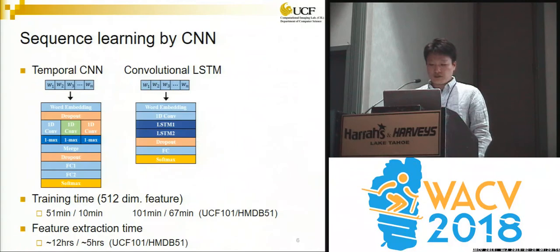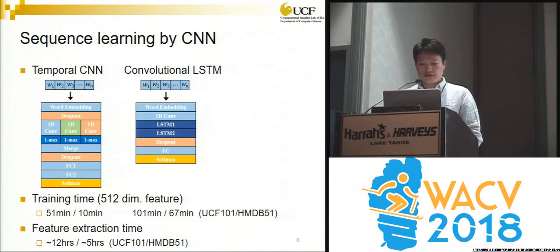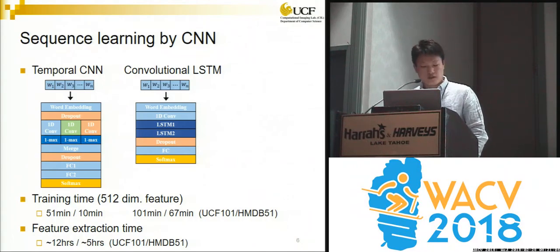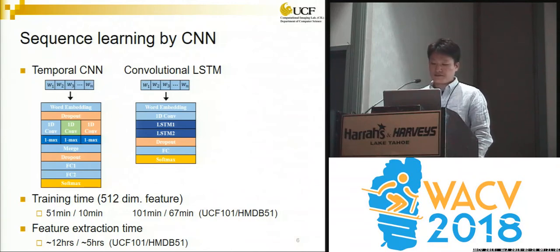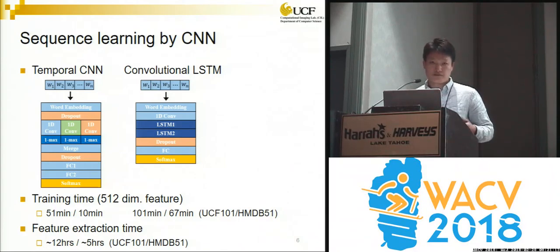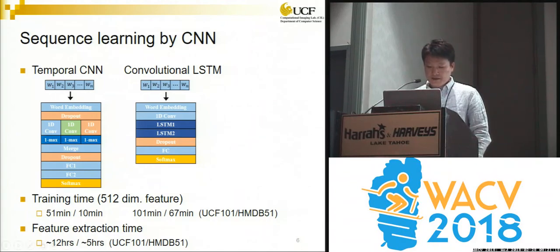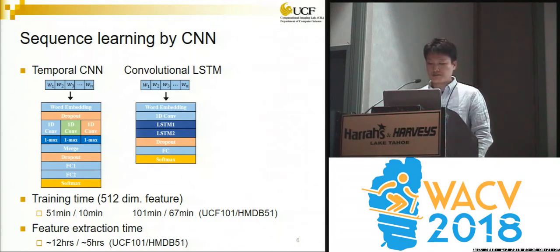Two different CNNs are employed to train the sequence of assigned numbers. Both networks contain a 1D convolution layer, which is useful for training ordered sequence data. A key benefit of these networks is training time, because they are very shallow and therefore very fast to train. Even though feature extraction is time-consuming, once the features are extracted, the sequence data can be learned with different CNNs.